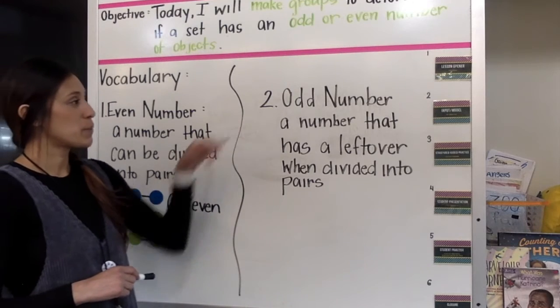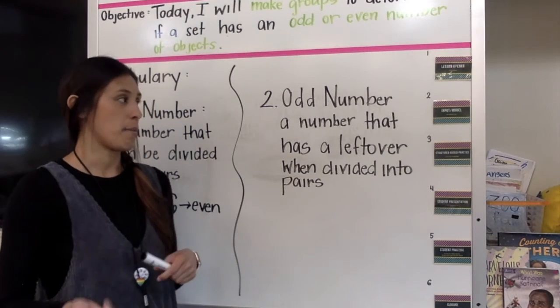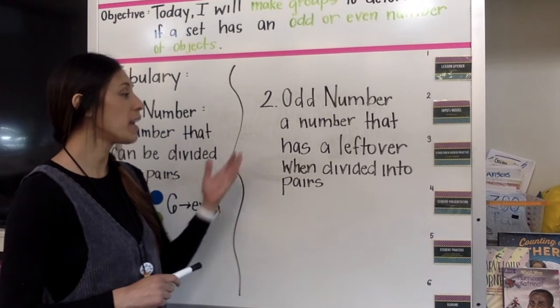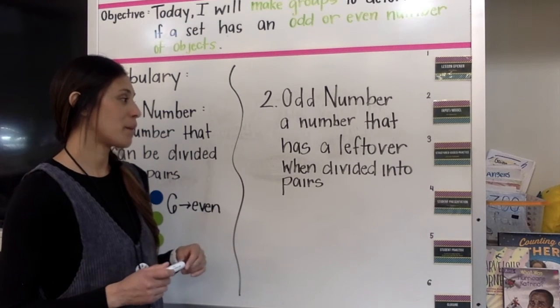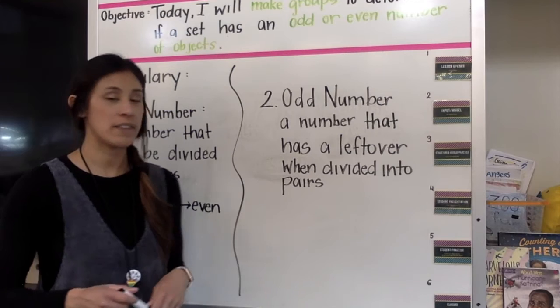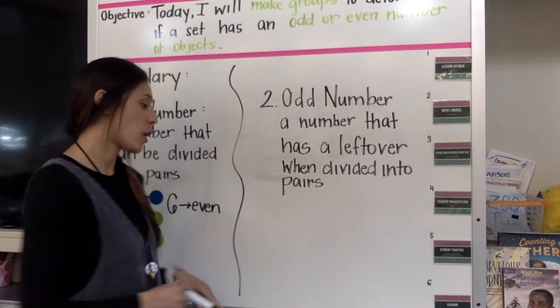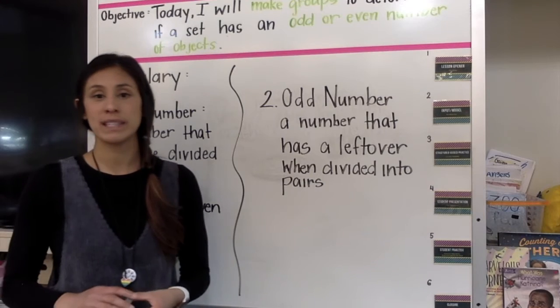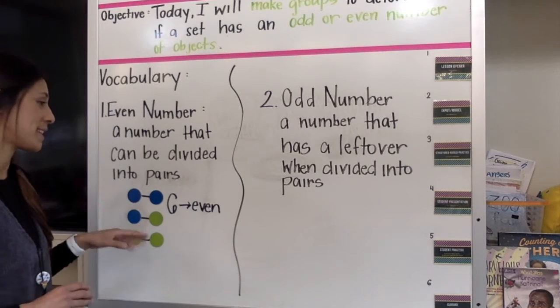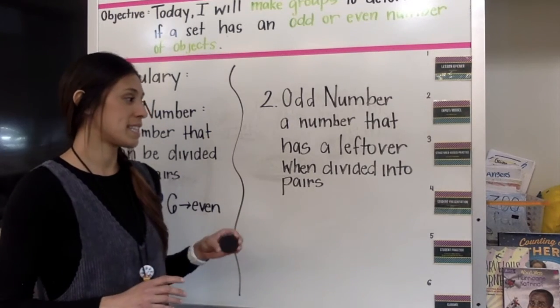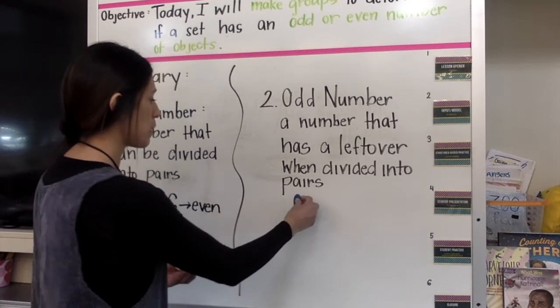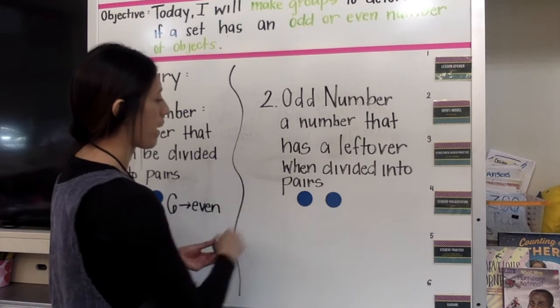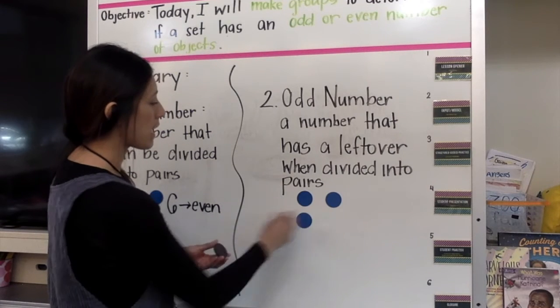Now, the next word we have is odd number. Can you say odd number? Great. And an odd number is a number that has a leftover when divided into pairs. So again, I have some magnets here. And I'm going to do the same thing that I did for the number six, but this time, it's a different number. So we're going to see what it looks like if it's odd. I'm just putting my magnets side by side.